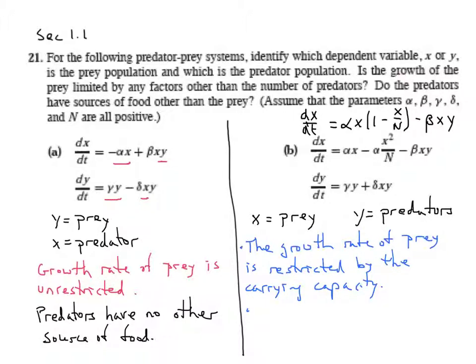So that's one answer. And the second answer is, do the predators have another source of food? Yes, they do. alternative source of food.